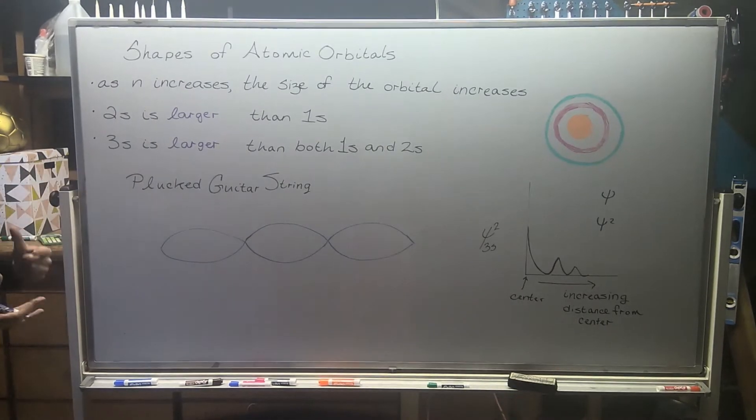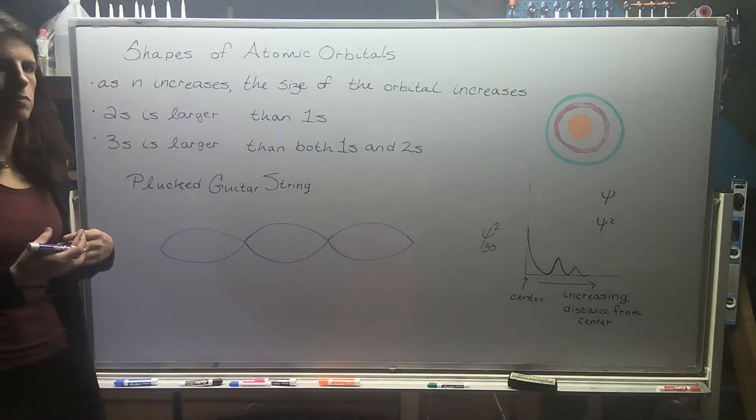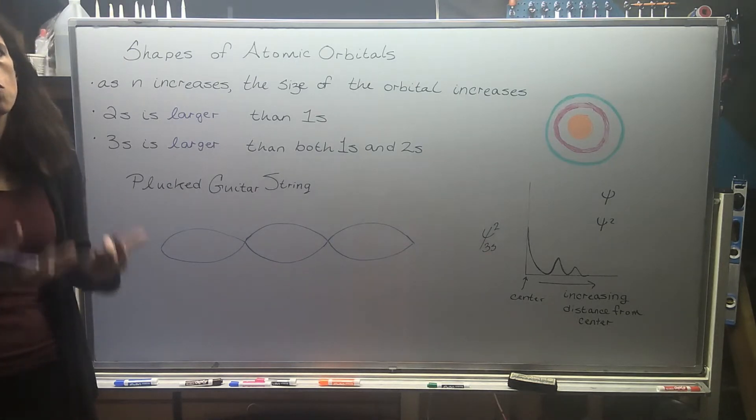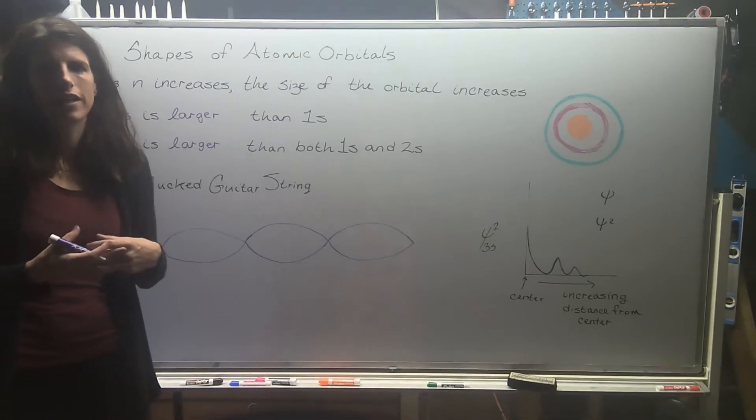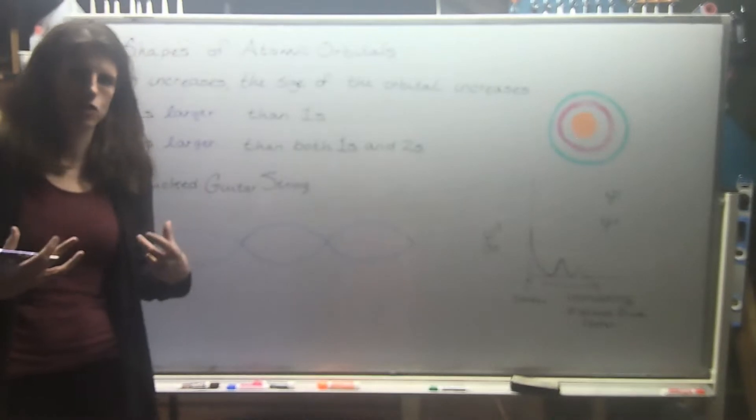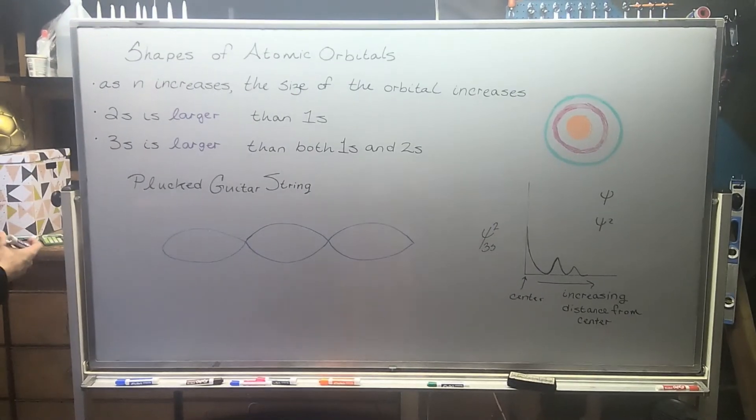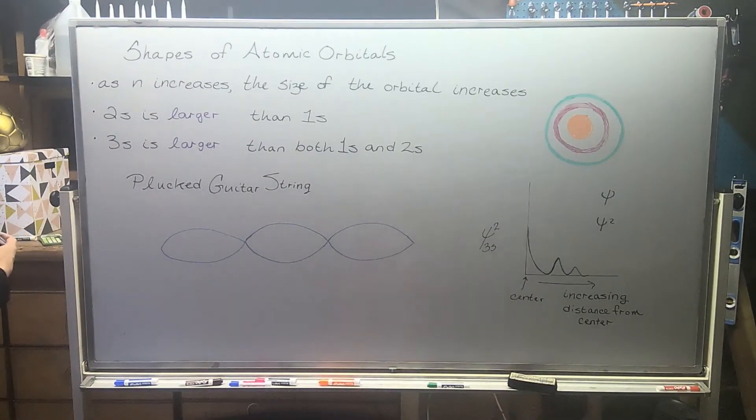We've already talked about how s orbitals are spherical. A lot of times, students will ask me, there's so many s orbitals inside an element. How do they look like together? What's the big picture?